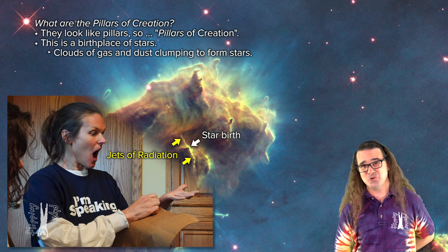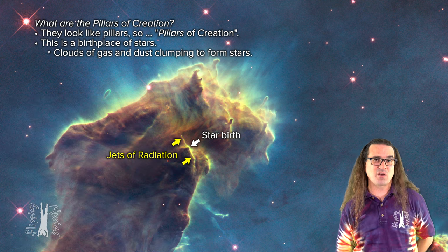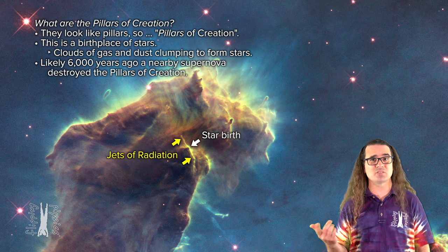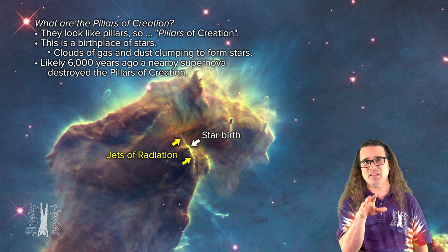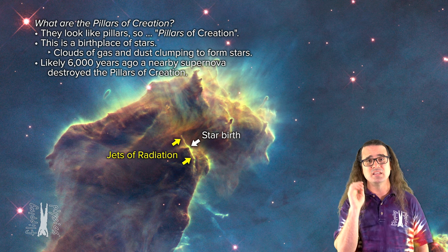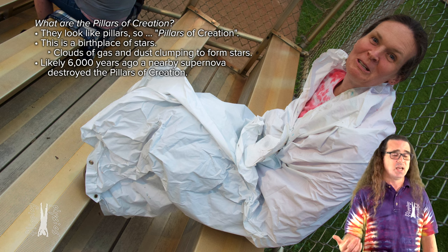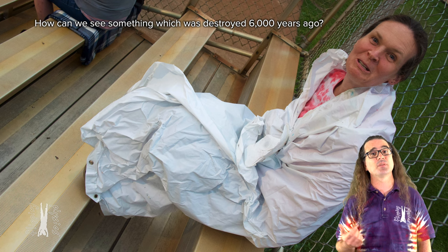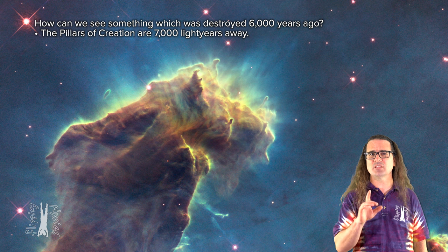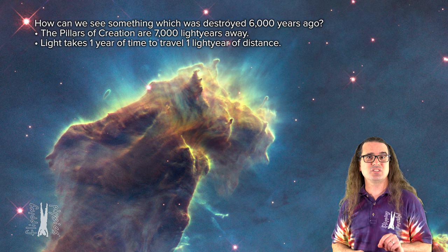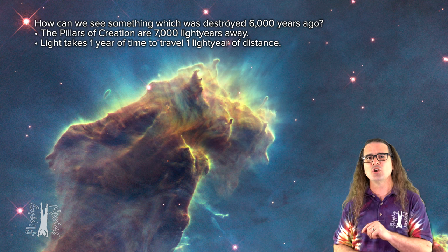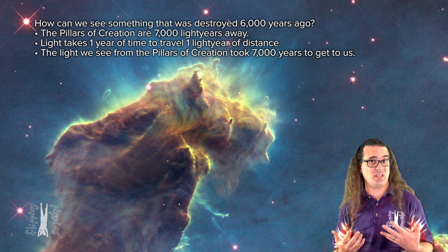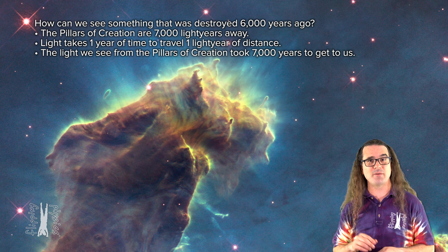Now unfortunately, there is evidence that a supernova, a giant exploding star, occurred roughly 6,000 years ago near the pillars of creation and the blast wave from the supernova likely blew apart the pillars of creation and they no longer exist. That's right, most likely this beautiful structure, the pillars of creation, was destroyed 6,000 years ago. Right Kate, I hear you. How can we be looking at something that was destroyed 6,000 years ago? Well, remember the pillars of creation are roughly 7,000 light years away. That means, because light takes one year of time to travel one light year of distance, we are looking at what the pillars of creation looked like 7,000 years ago. Again, this is because the light has taken 7,000 years to get to us from the pillars of creation.